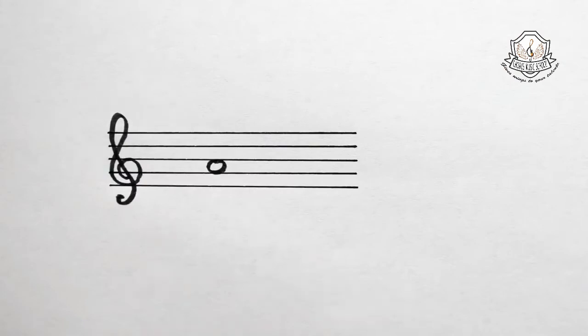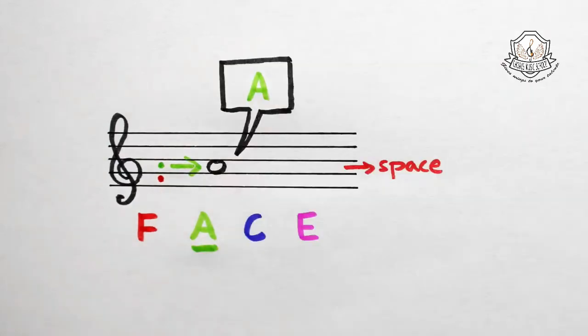Let's do another one. This time the note is in a space, so we should use the FACE rhyme. Again, starting at the bottom space, we go F, A, and we don't need to go any further. Our note is an A. Easy.